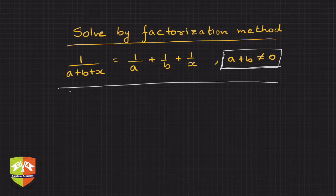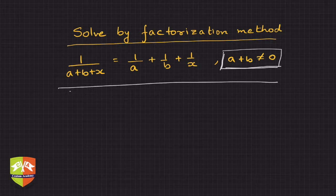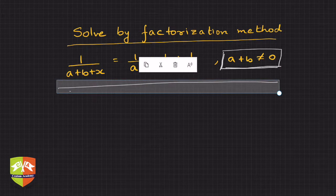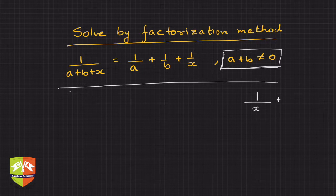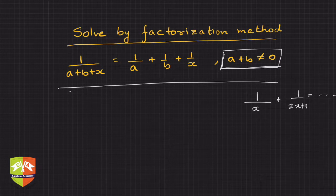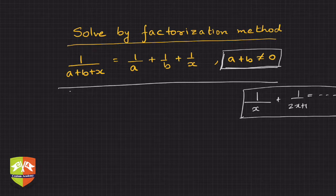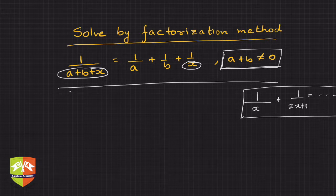Clearly, in its current form we can't call it a linear or quadratic equation, but it can certainly be reduced to quadratic form. Whenever you see two terms where the variables are in the reciprocal — for example, one upon x plus one upon (2x + 1) — with some constant on the other side, you can fairly guess this is going to be a quadratic equation. Since there is an x term in the denominator here, this will end up being a quadratic equation.